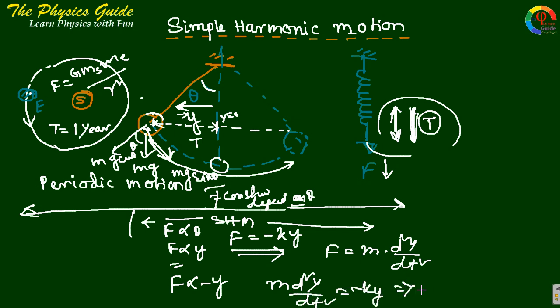This implies d²y/dt² plus k by m times y equals zero.